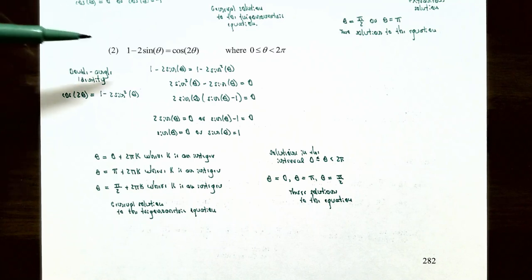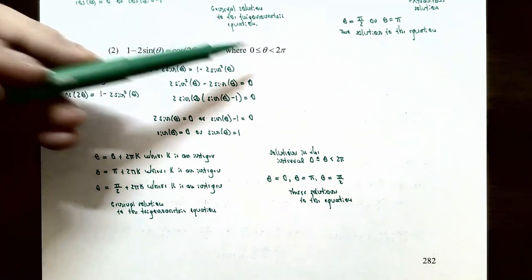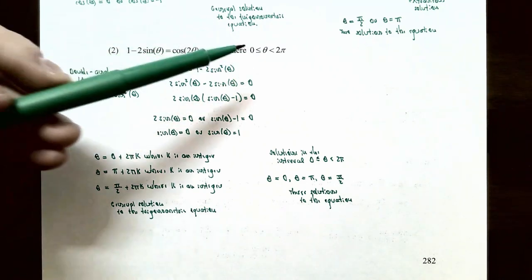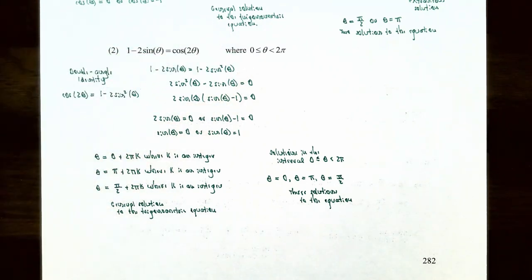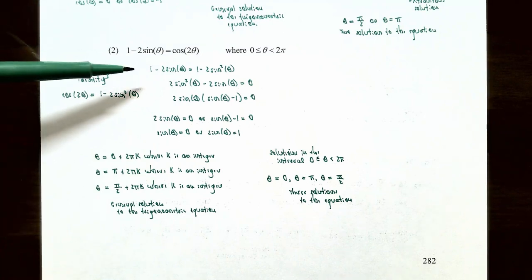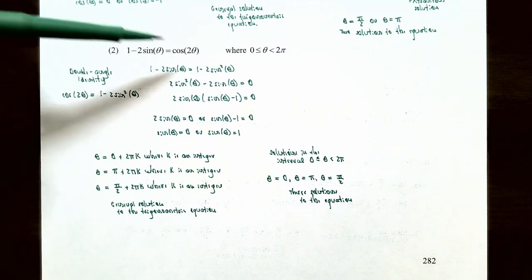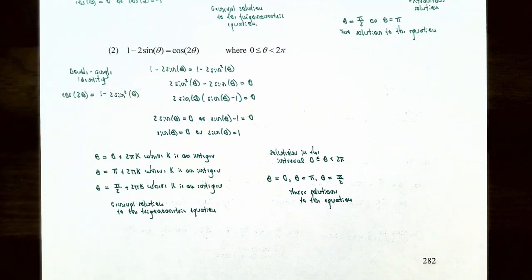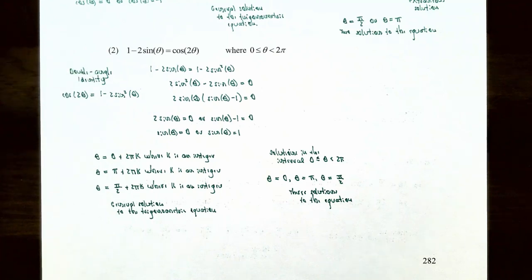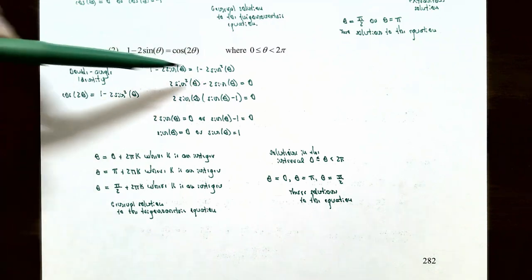For number two, the equation is one minus two times sine of theta equals cosine of two theta, where theta is between zero and two pi including zero. On the right side we have cosine of two theta — a double angle. The left side stays the same, but we'll use the double angle identity for cosine: cosine of two theta equals one minus two sine squared theta. Now the entire equation involves only the sine function.